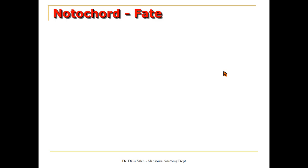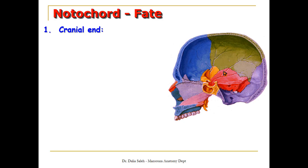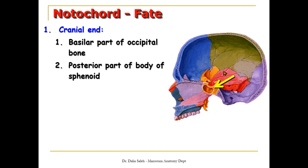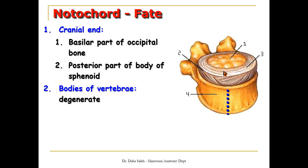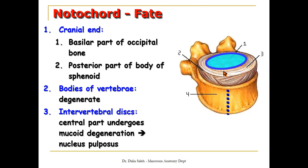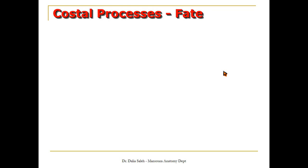What is the fate of the notochord? The cranial end of the notochord will form the basilar part of the occipital bone and the posterior part of the body of the sphenoid — so it contributes to the formation of the base of the skull. The notochord inside the bodies of the vertebrae degenerates, and the only part that persists is in the intervertebral discs, where it undergoes mucoid degeneration and forms the nucleus pulposus.